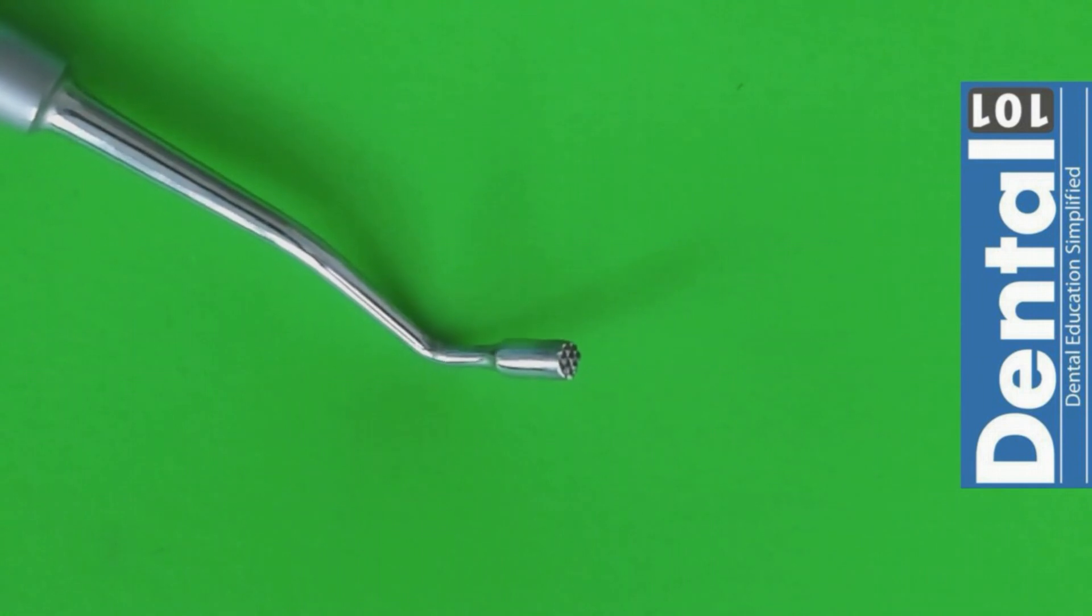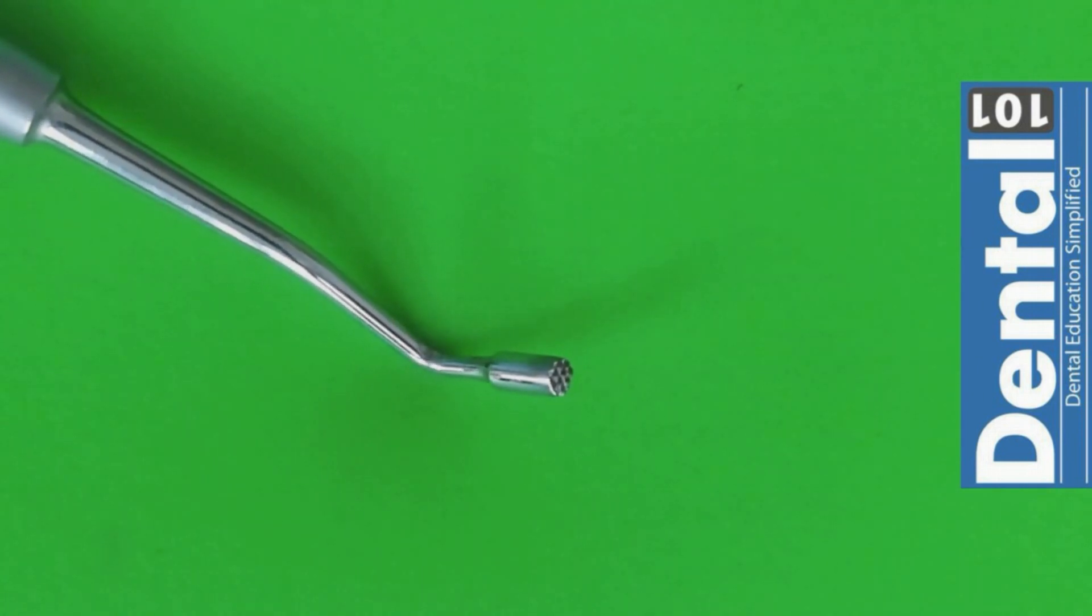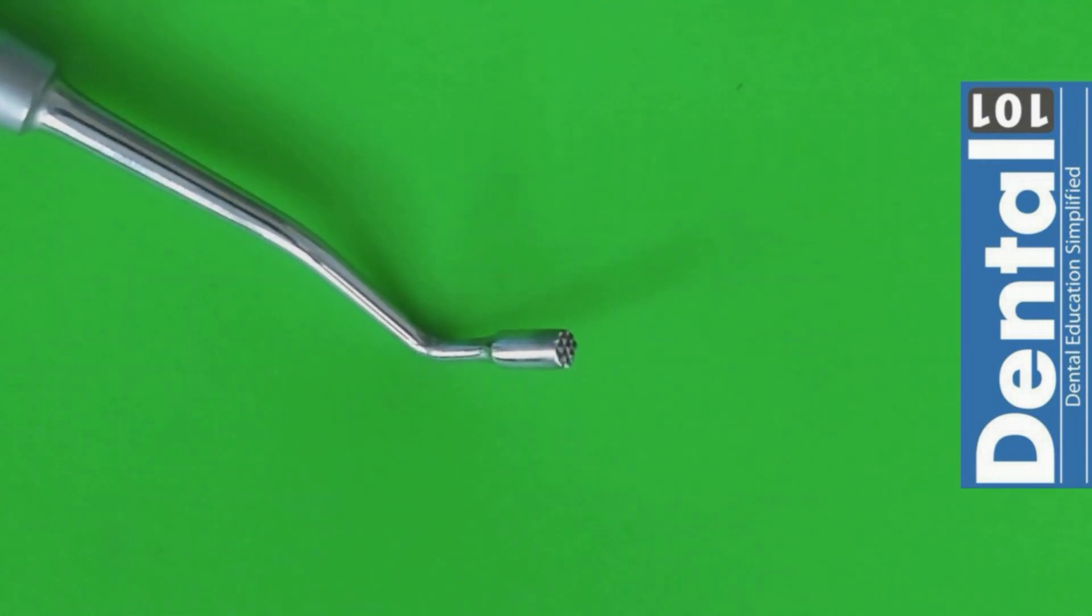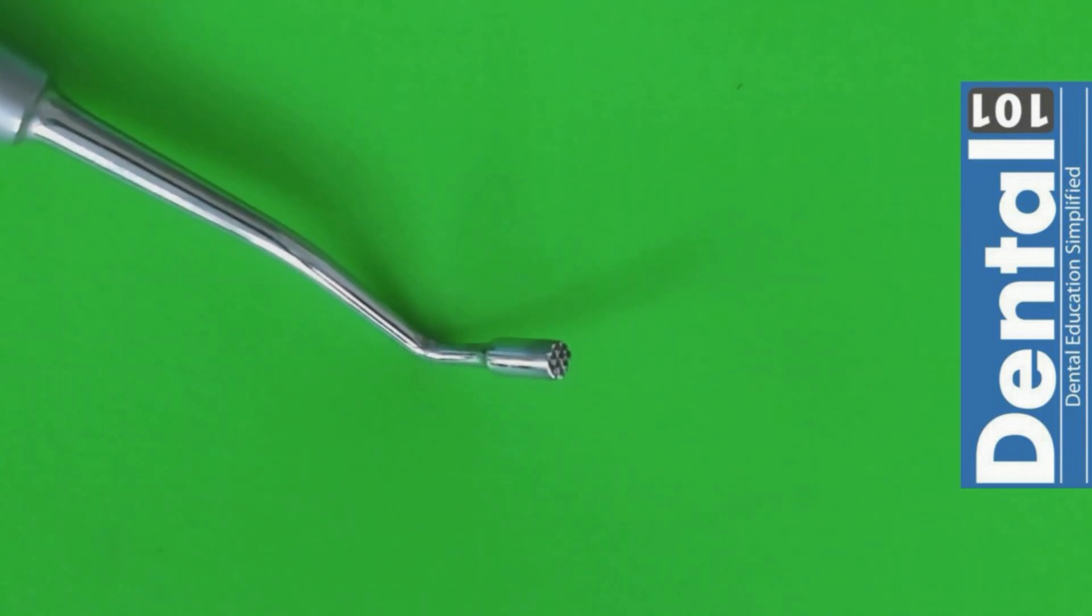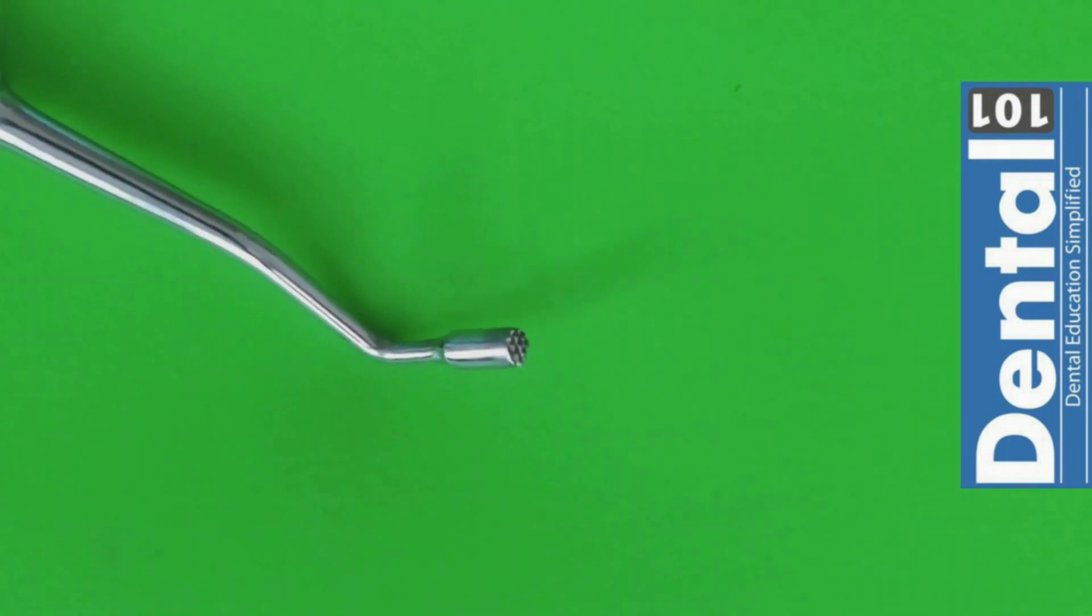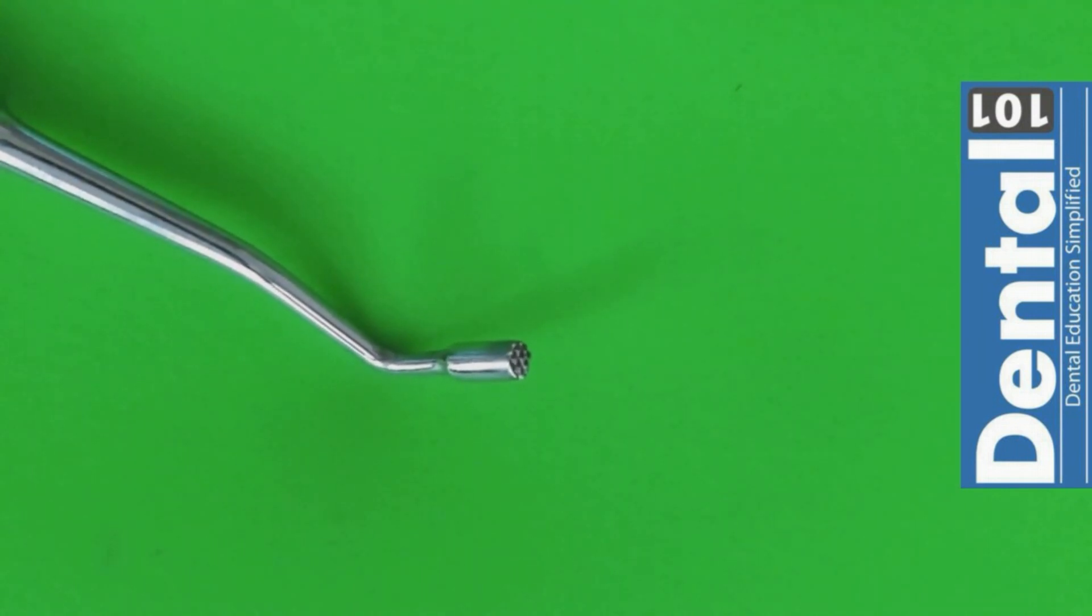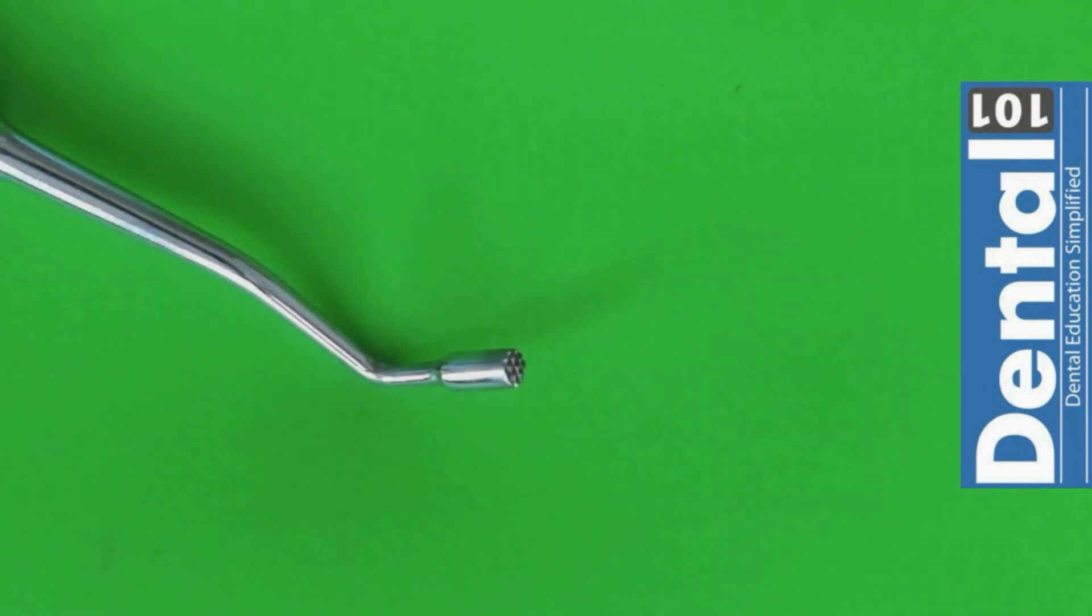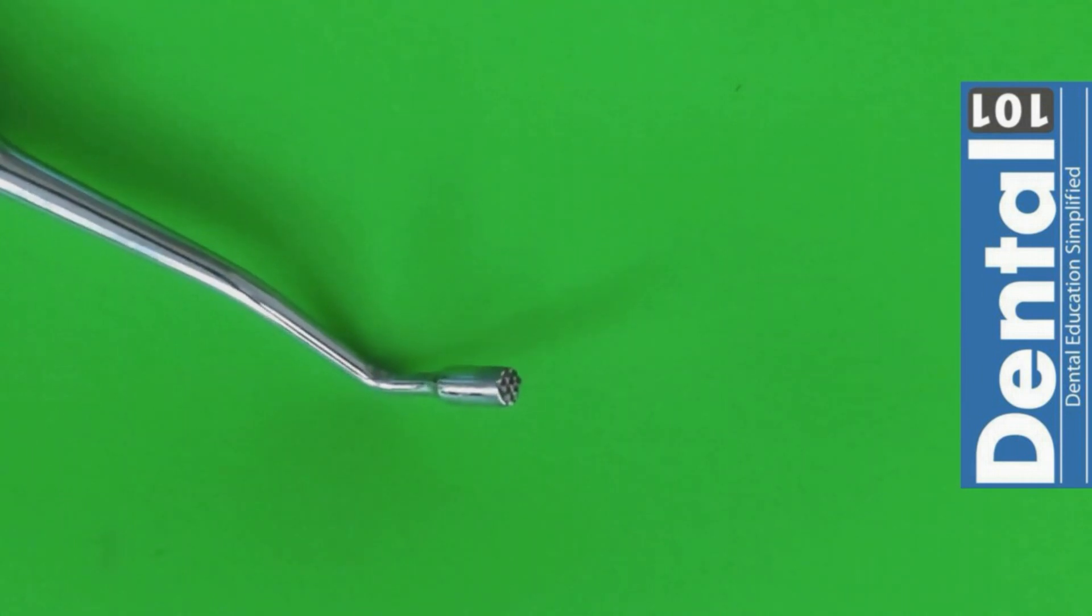Here we have the condenser amalgam or the amalgam plugger. This one is just specifically for amalgams, unlike the Martenson plugger that you can use for composites and amalgams as well. This one is just for metallic fillings such as amalgam. As you can see, the working end has this little grid pattern that is going to help you condense your amalgam quite well.